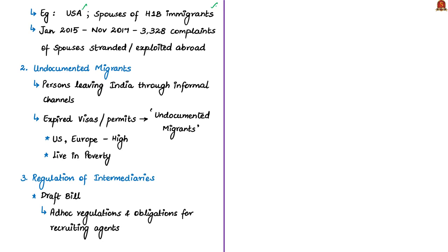So you can call the spouses of high-skilled immigrants as dependent migrants. Many incidents have been reported regarding Indian spouses being attracted abroad in marriage and then getting stranded or exploited. Between January 2015 and November 2017, the government received 3,328 such complaints on stranding and exploitation.